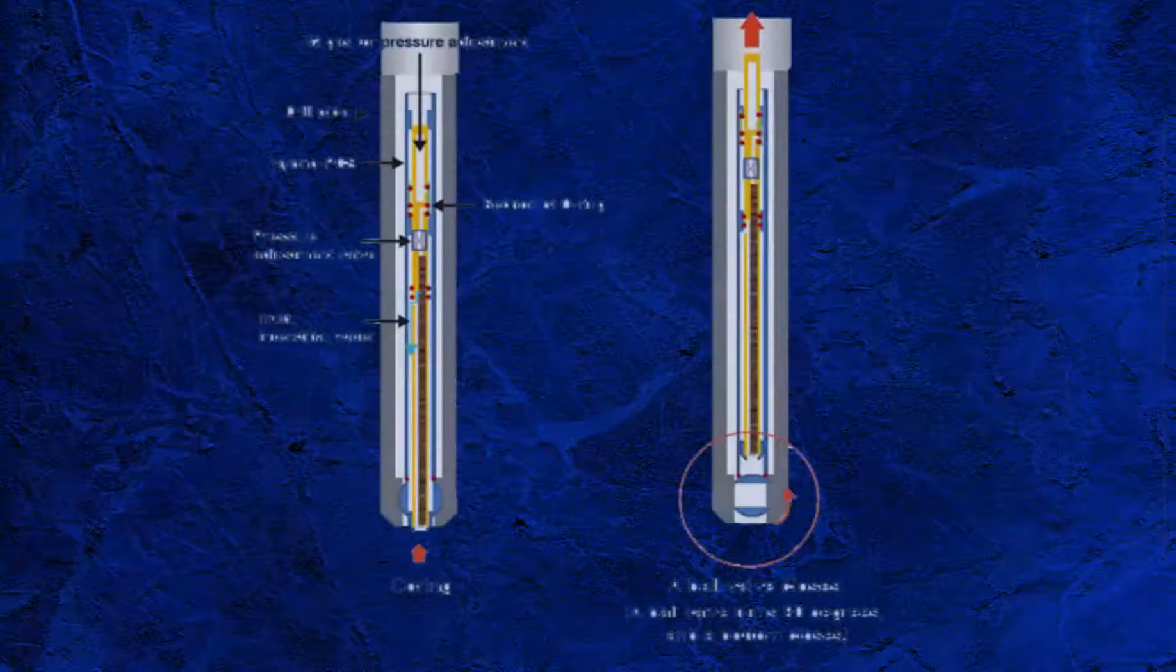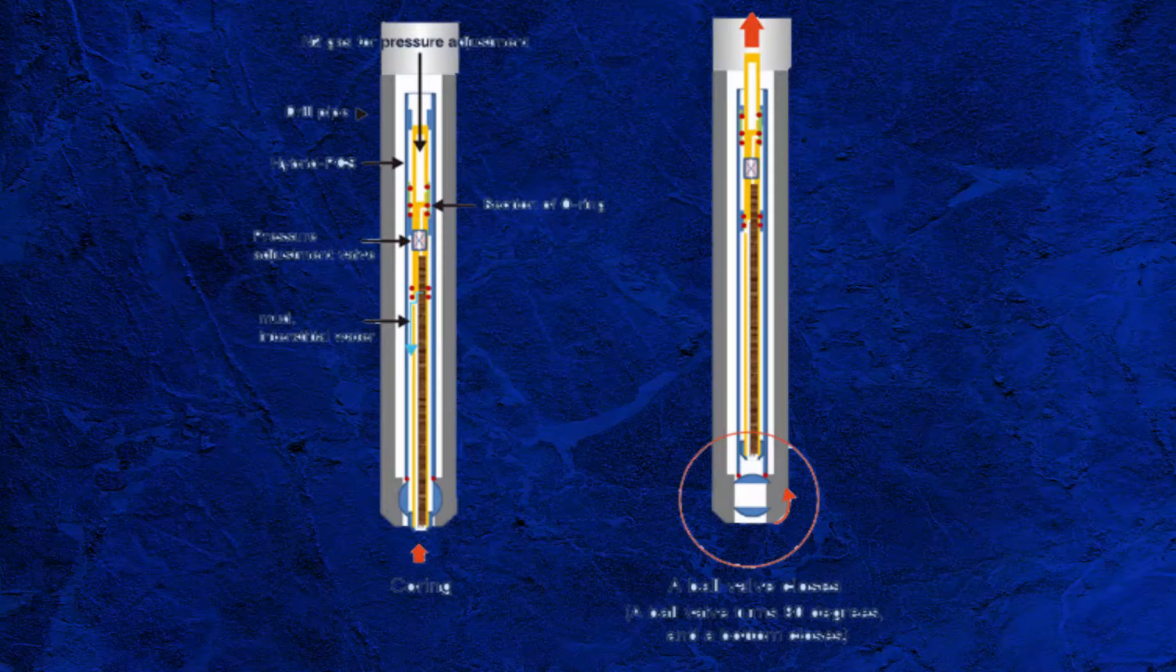Pressure coring aims to maintain downhole pressure at surface and prevent the loss of in-situ fluids and gases during depressurization. A core is cut using the conventional rotary style and upon completion, the barrel is activated using a drop ball. Once activated, the core barrel seals fully at the top and bottom to maintain internal pressure as the barrel is recovered to surface.